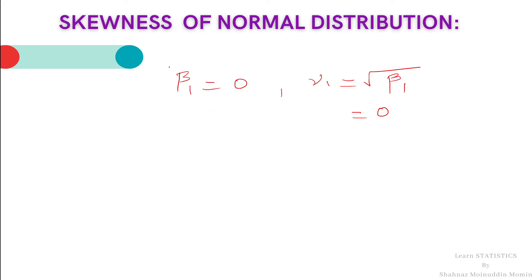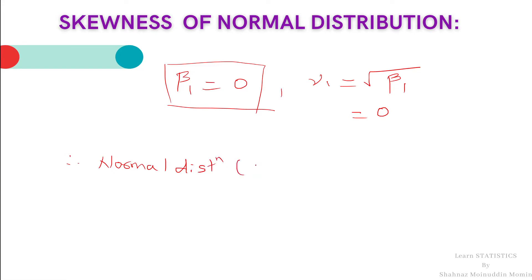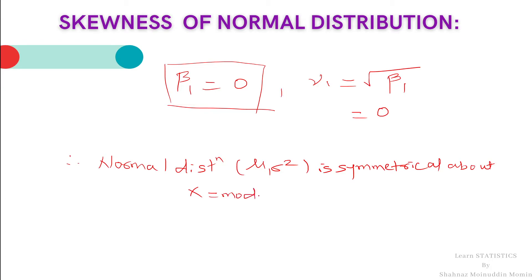We have already studied that if beta 1 equals 0 then the corresponding distribution is symmetrical. Therefore, the normal distribution with parameters mu and sigma squared is symmetrical about x equal to the mode, and the value of mode is equal to mu. So normal distribution is symmetrical about mu. Students may refer to that lecture by clicking on the top right corner of the screen; the link is also mentioned in the description below.